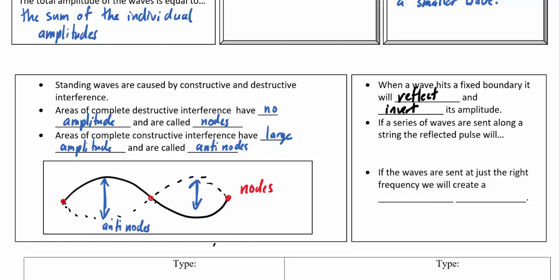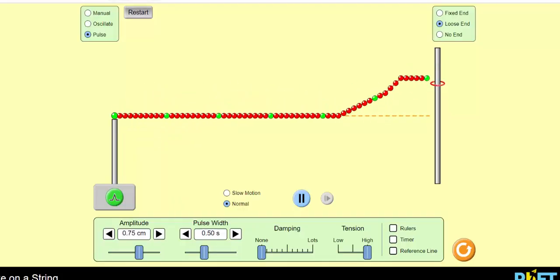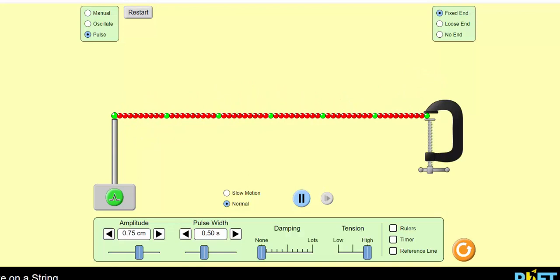If a series of waves are sent along the string, the reflected pulse will interfere with itself. What I mean by that is, if we have a series of waves, when they reflect from this fixed end, those waves will actually bounce off and then run into each other. As they run into each other, they're going to interfere. If they're opposite in terms of a crest and a trough, it's going to be destructive interference. If they're the same, then it's going to be constructive interference.